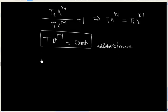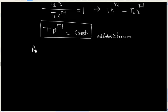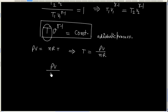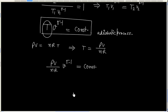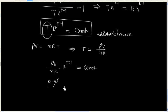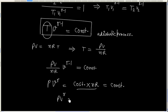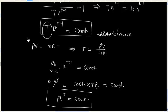We can also write the same equation in terms of pressure and volume. Since PV equals NRT, we have T equals PV divided by NR. Substituting the value of temperature into the equation T V^(gamma minus one) equals constant gives us (PV/NR) times V^(gamma minus one) equals constant, which simplifies to PV^gamma equals constant times NR. So PV^gamma equals constant is also the equation for an adiabatic process. Either we can write T V^(gamma minus one) equals constant, or PV^gamma equals constant.